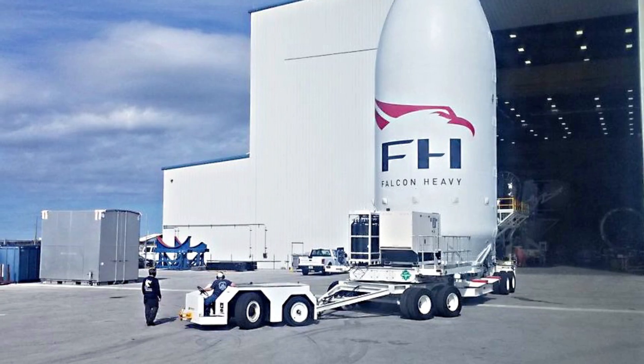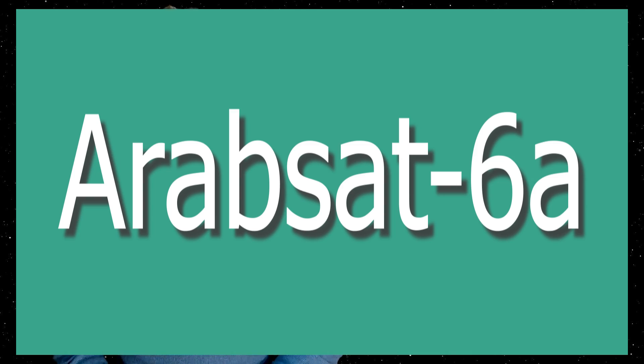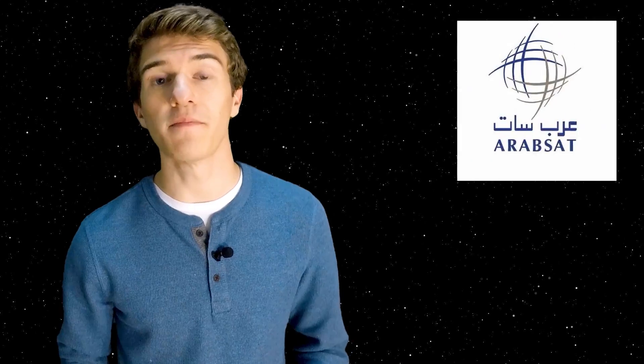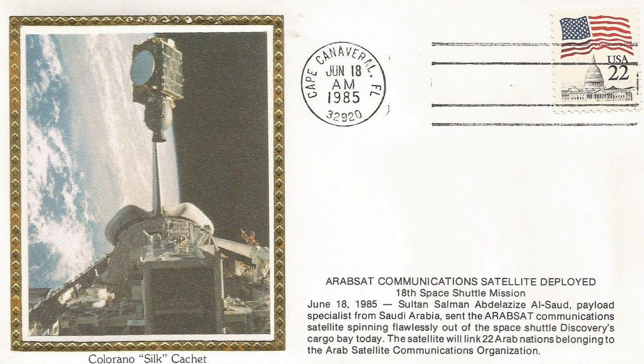So what exactly is the Falcon Heavy sending into orbit? The very first Falcon Heavy launch sent a Tesla Roadster into heliocentric space, but in this case it's sending an operational satellite called Arabsat 6A. Now Arabsat is an organization that tries to improve communication services to Arab nations. There are 21 different Arab countries that are shareholders in this organization, with Saudi Arabia being the biggest shareholder. And you can probably imagine from the name Arabsat 6A, this isn't the very first one. In fact, the very first one took place in 1985.